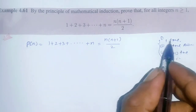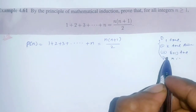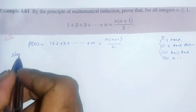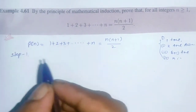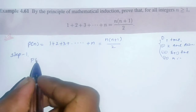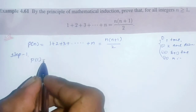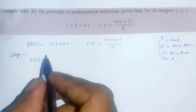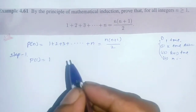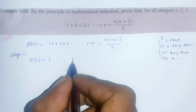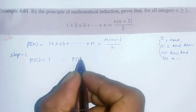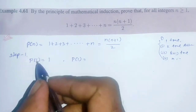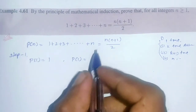Step 1: Prove P(1) is true. The first number is 1, so we check P(1) by substituting n=1. The LHS is 1, and the RHS is 1(1+1)/2.